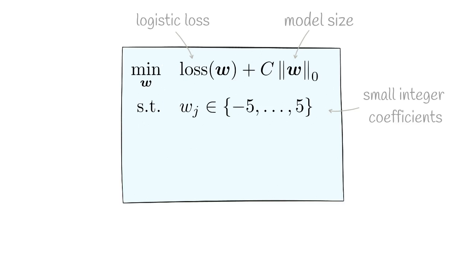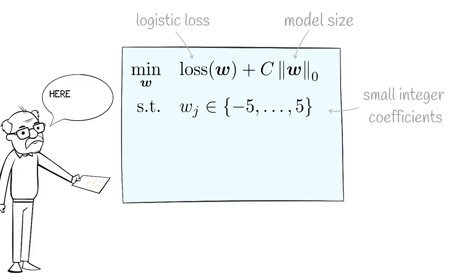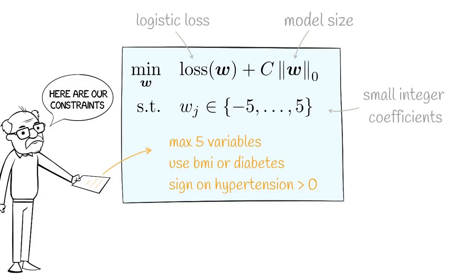Since this approach uses exact quantities, we can also easily include the constraints from domain experts. The solution to our problem is a risk score that is fully optimized for performance. We call it Risk SLIM.